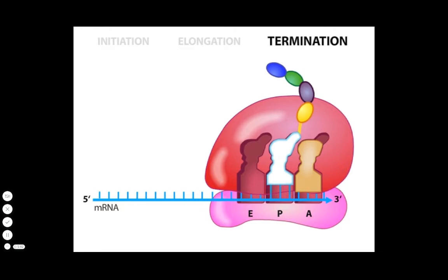Another factor, called RF3, then triggers RF1 or RF2 to depart the ribosome.